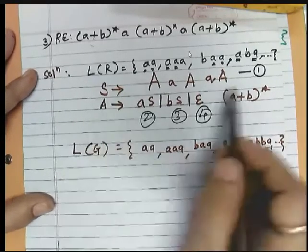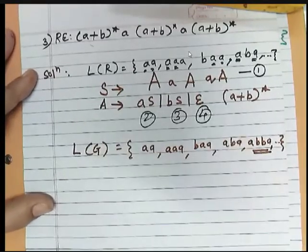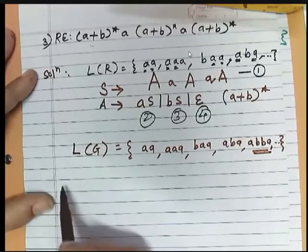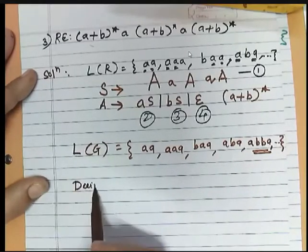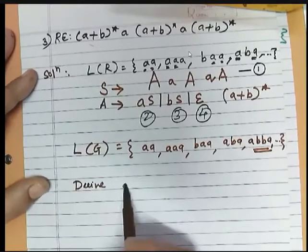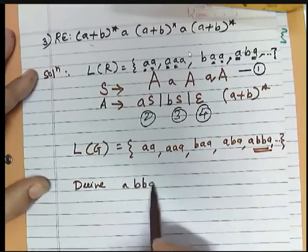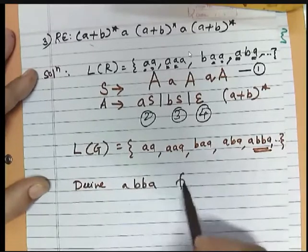We have written down the grammar, so we will start deriving. Let's derive the string a b b a — a b b a.